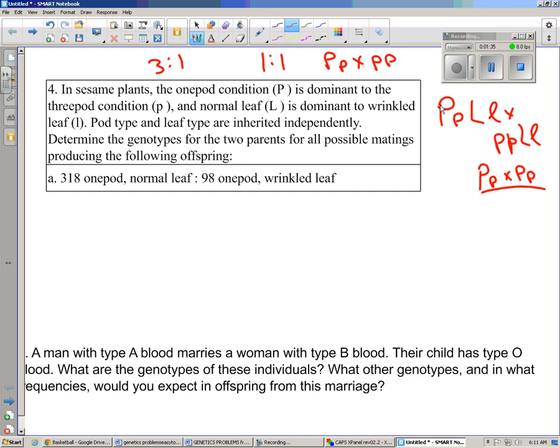According to this, in sesame plants, the one-pod condition is dominant to the three-pod condition. If we look at our data here, we have 318 plus 98, which is 416 one-pod and zero three-pod.